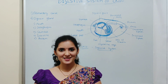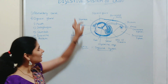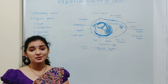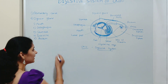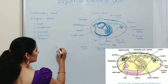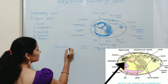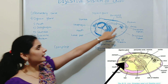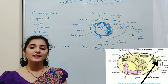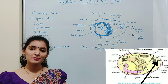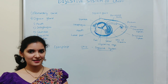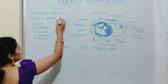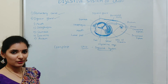In this video, we will discuss the concept of the digestive system of Unio. The digestive system of Unio is complete, meaning it begins at the mouth and ends at the anus. The digestive system of Unio mainly consists of two parts: the alimentary canal and the digestive gland.